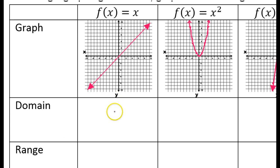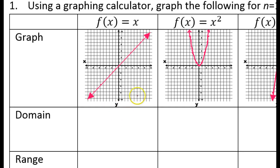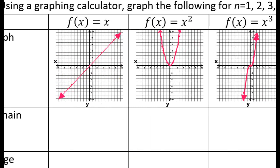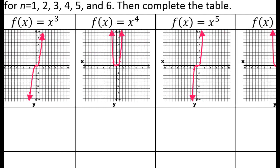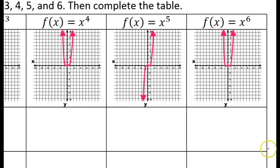Let's talk about the domain. Notice that all of the graphs are unbroken from left to right — they go left forever and right forever in each case. So they will all have the same domain: negative infinity to positive infinity.